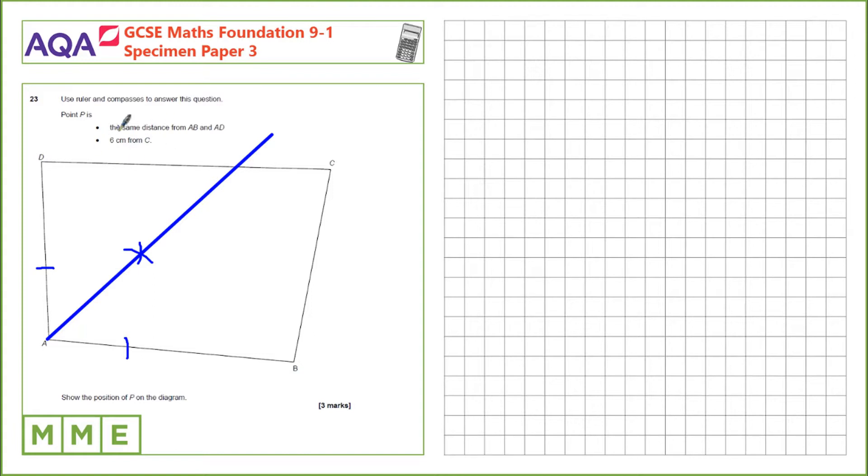Next we want something that's 6cm from C. For this, we'll take our compass and measure it to 6cm span, place the point of our compass on C, and draw an arc that cuts all of this area. So every point in this arc should be 6cm from C.